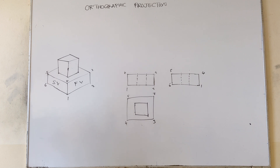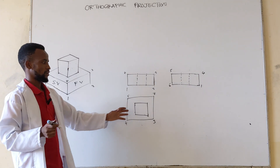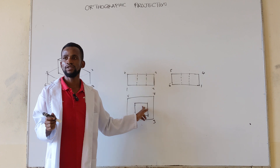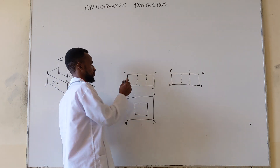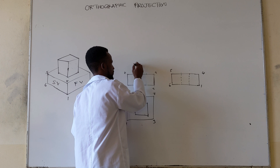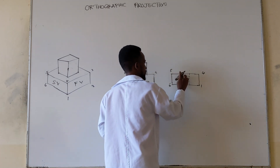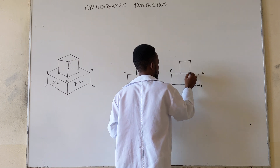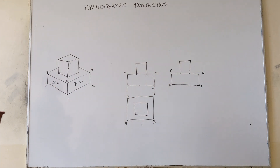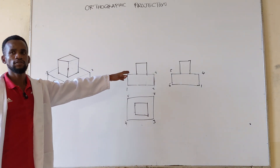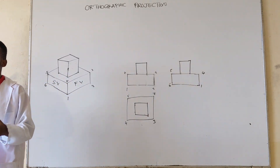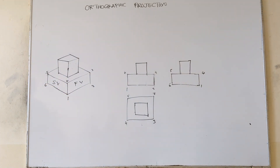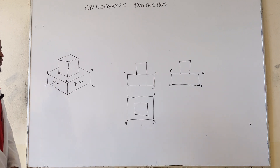Even for something like this, at the front and the end will look just the same, but it will go up like that. For something like a cylinder, the front and end views will look the same, but the top view is where you can tell whether it is a cylinder or a cube.